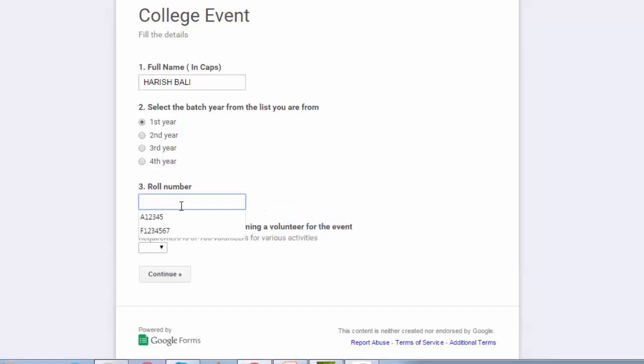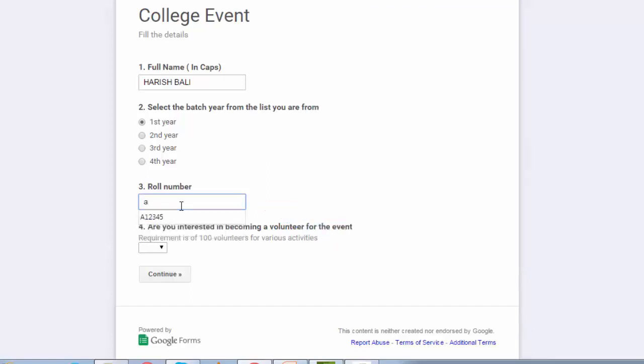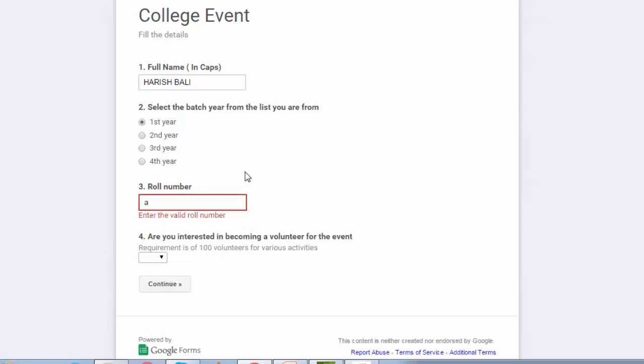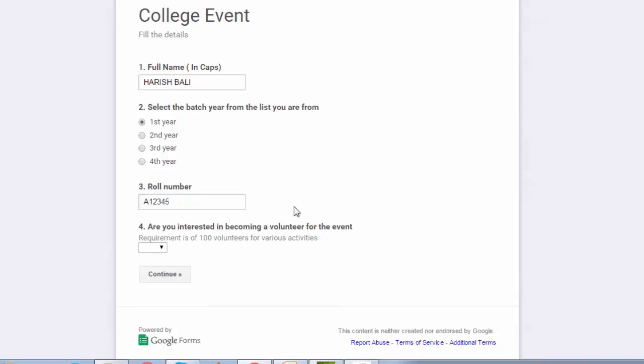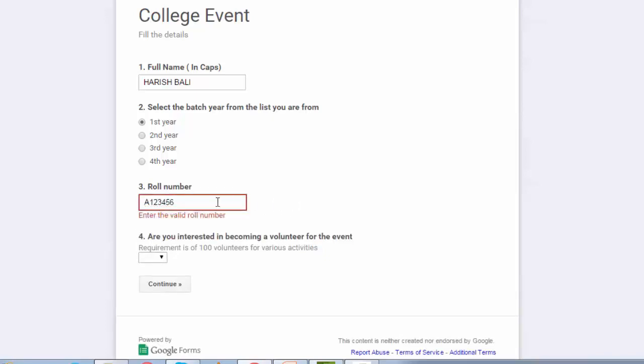Let me now put up a roll number here. I am putting A small 1, 2, 3, 4, 5. It's showing enter a valid roll number. Moment I go back and make it from small to caps it accepts the roll number. Let me try entering 6th digit and it shows invalid.